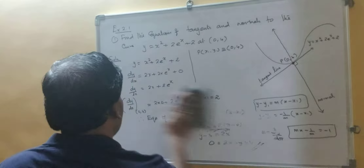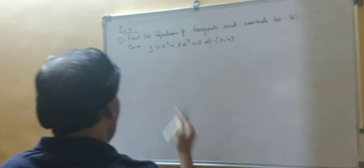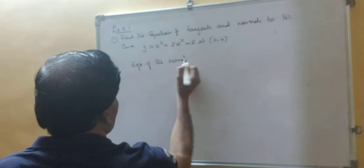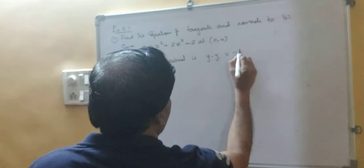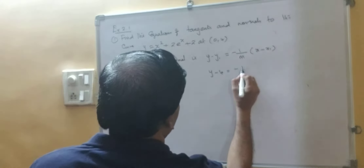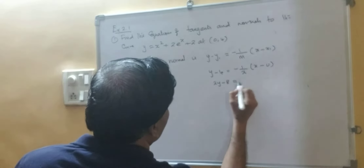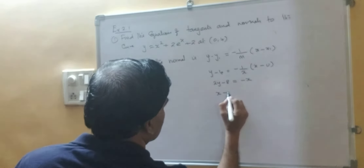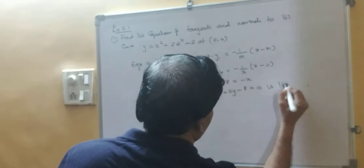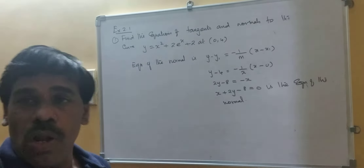Now how to find out the normal. Equation of the normal is y minus y1 equal to minus 1 upon m into x minus x1. So y minus 4 equal to minus 1 upon 2 into x minus 0. Cross multiply: 2y minus 8 equal to minus x. Taking everything to one side: x plus 2y minus 8 equal to 0, which is the equation of the normal.